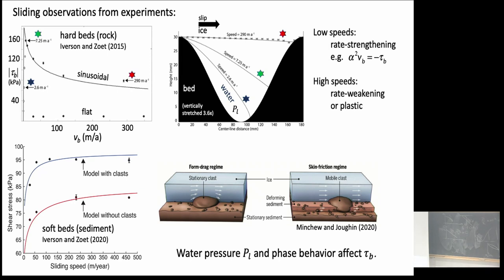Some glacier beds are hard beds — made out of rock, unable to deform. We call them soft beds if made out of sediments that can deform. With experiments over sediments, shear stress increases with sliding speed but plateaus: at low speeds the ice deforms to get over bumps — form drag — but if you slide fast enough, you just pick up rocks and plow them through the sediments via Coulomb friction, which explains the rollover.